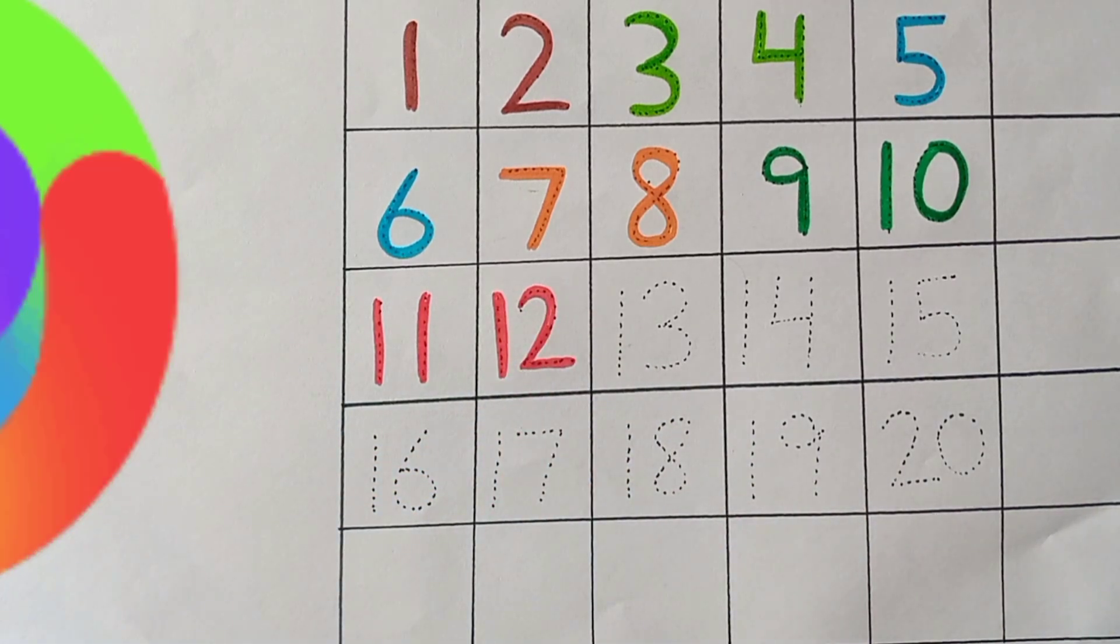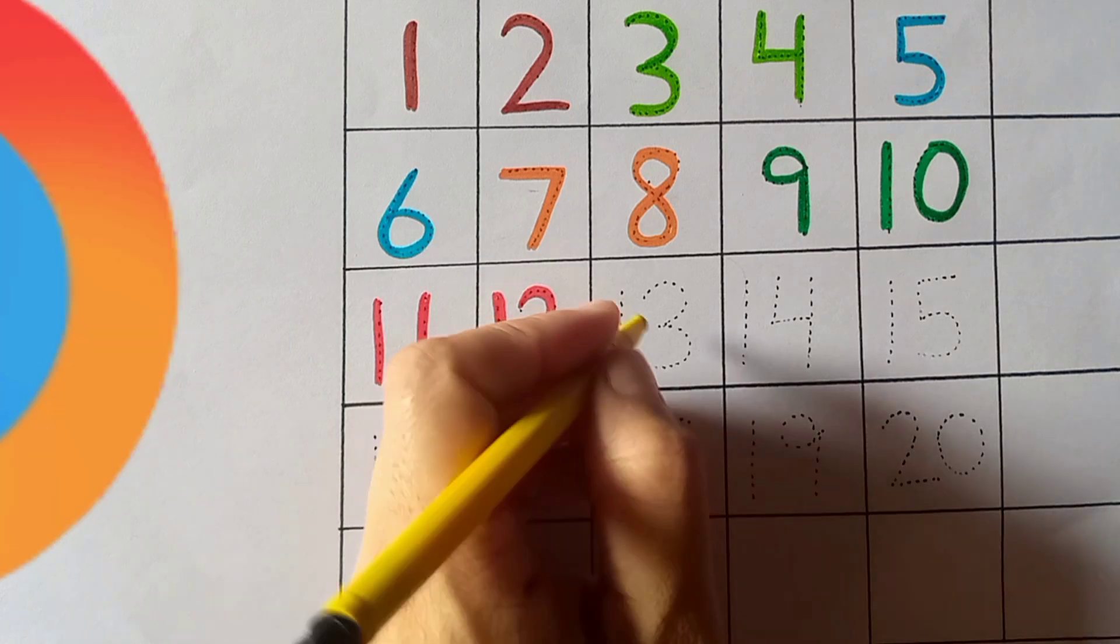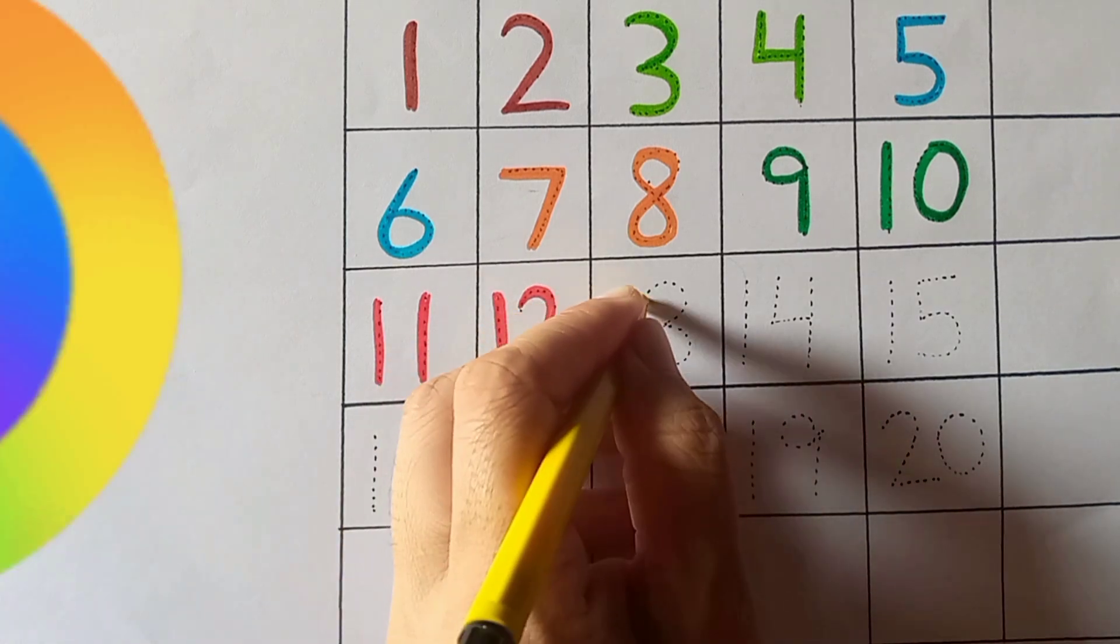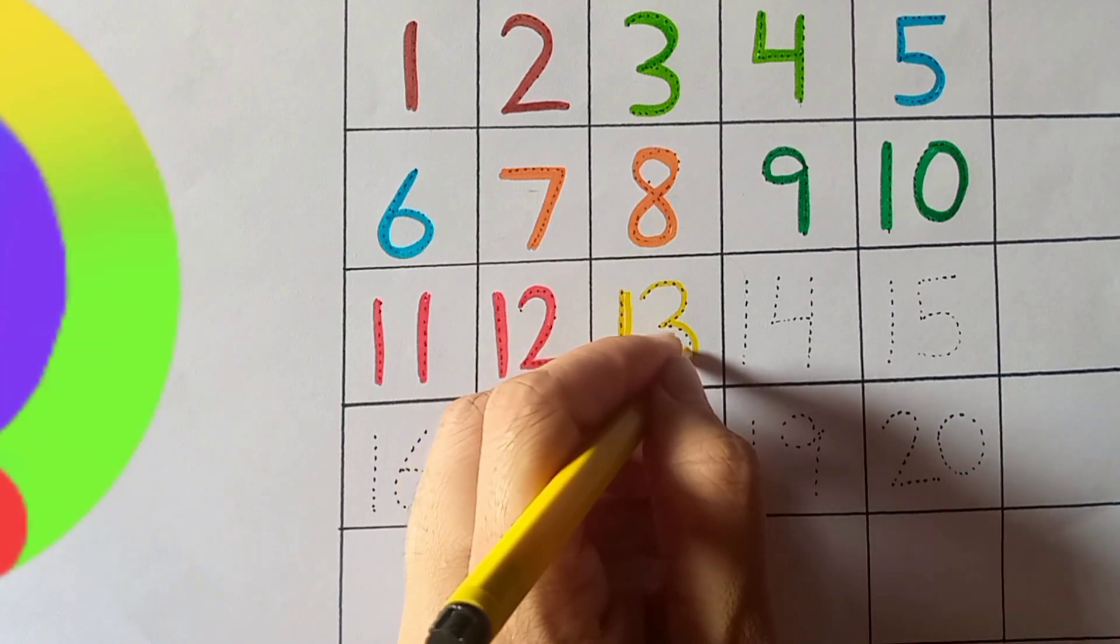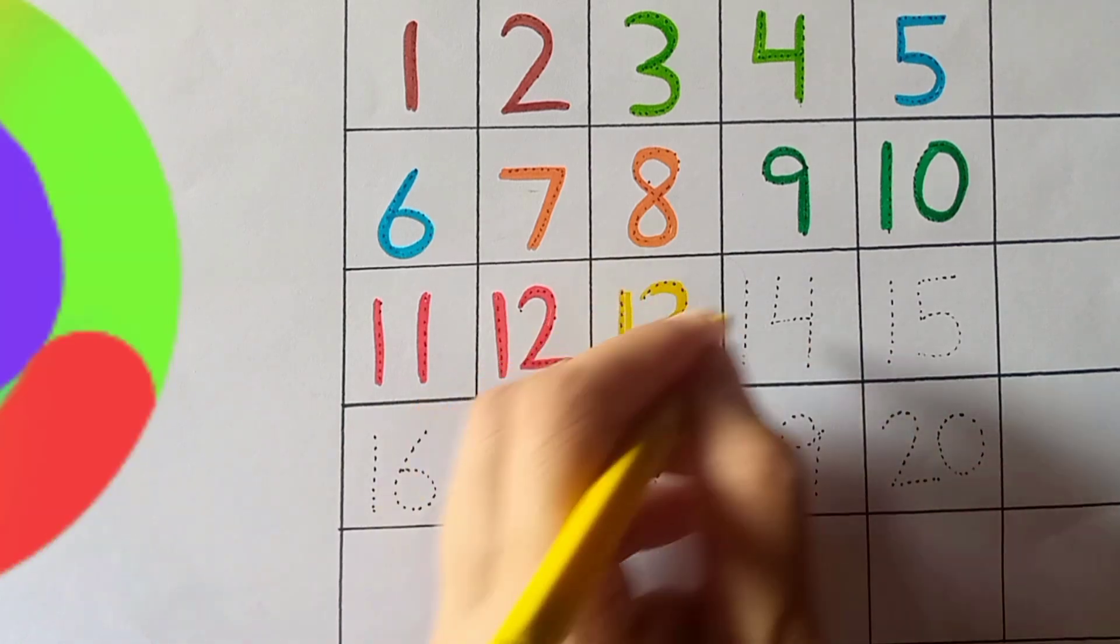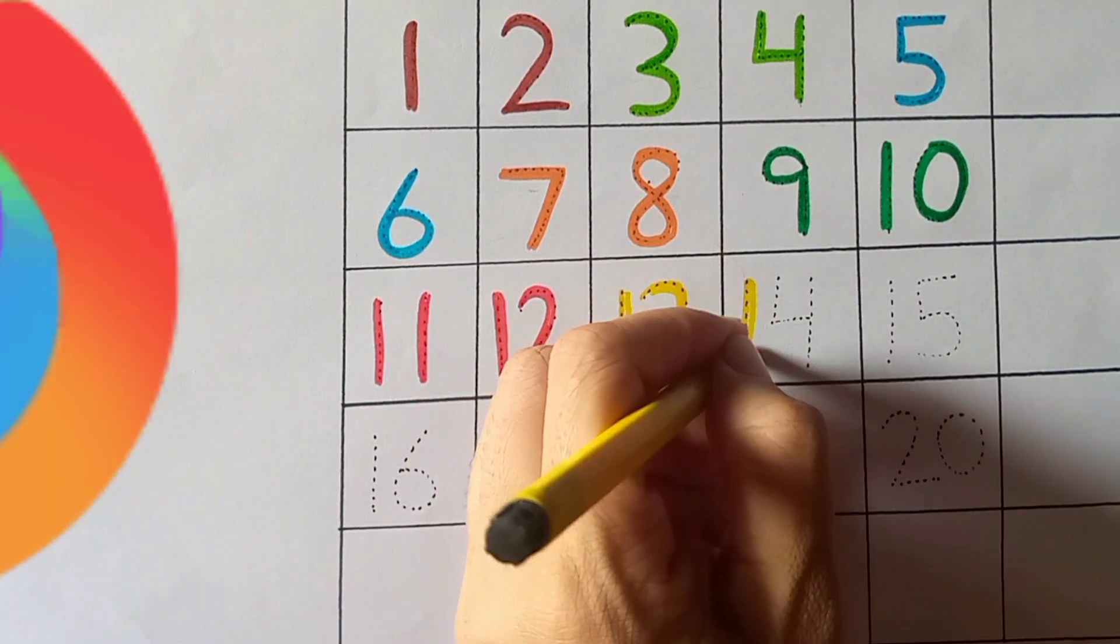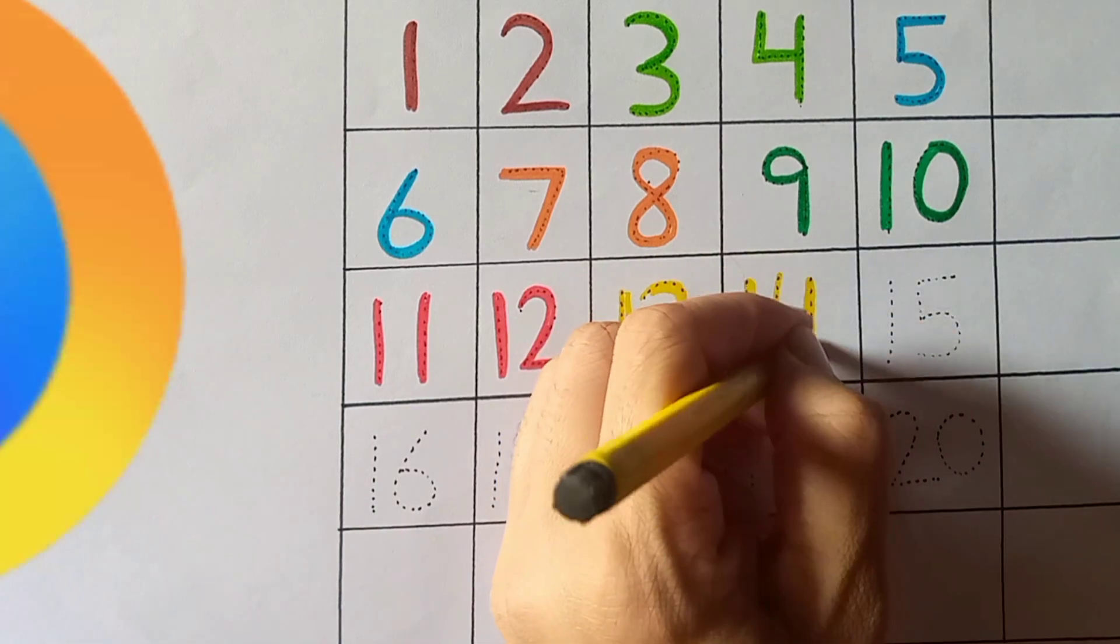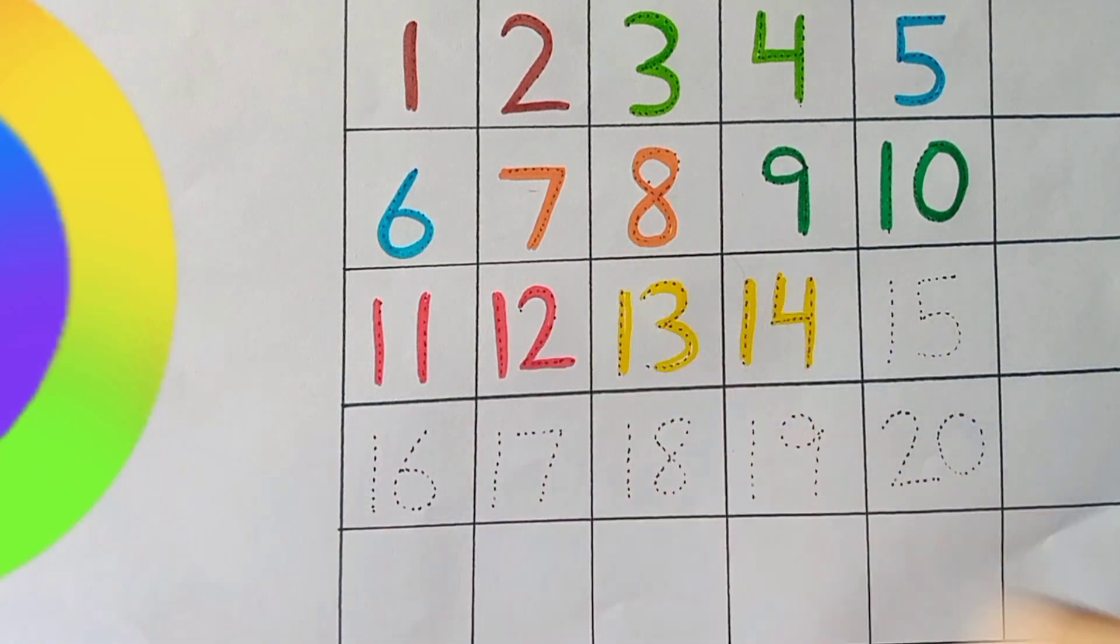One, two, twelve. Alright, four, four, four, four, five.